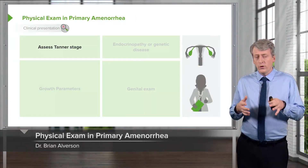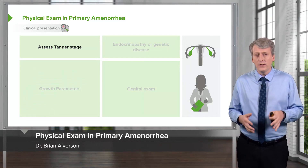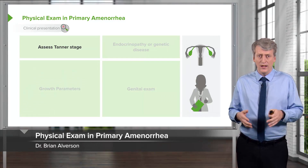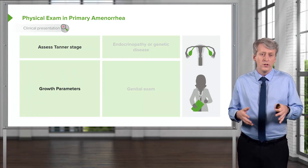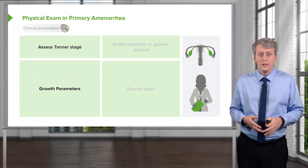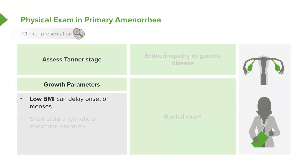During the physical exam, it's important to assess the Tanner stage. It's important to measure growth parameters — specifically, a low BMI may delay onset of menses, as seen in athletic kids or kids who are dieting. Short stature may indicate a genetic or endocrine disorder.